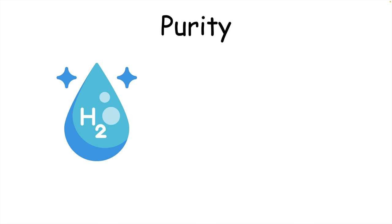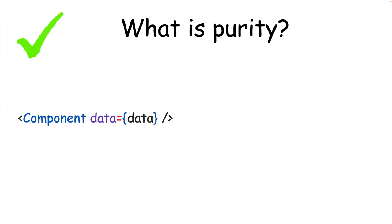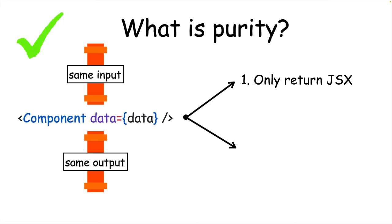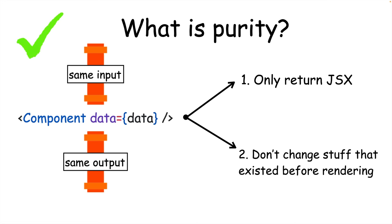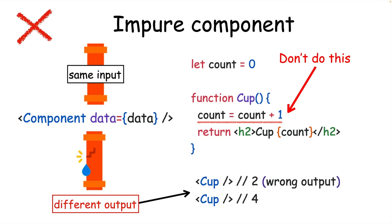When you think of the word purity, you might think of something like purified water. But purity in React is more like how mathematical formulas are pure. Pure React components mean that the same input should always return the same output. To keep a React component pure, it should only return its JSX and not change any objects or variables that existed before rendering. The cup component in this example is impure because it changes the variable count during render, which exists outside the component, leading to wrong JSX output when used more than once.